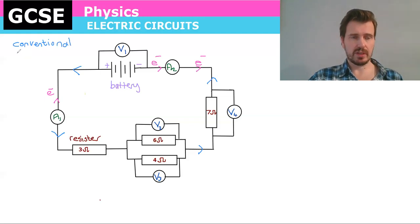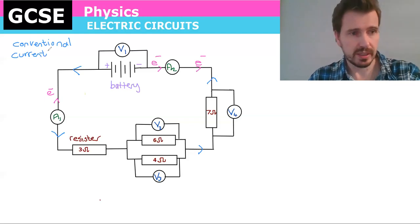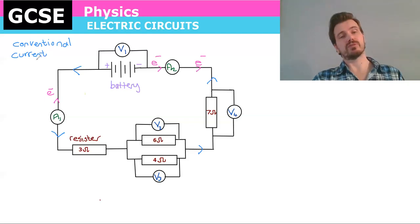Now the reason we use conventional current is because when Benjamin Franklin was studying electricity he thought that the electrons are flowing from positive to negative, but what's actually happening is they're flowing from negative to positive.